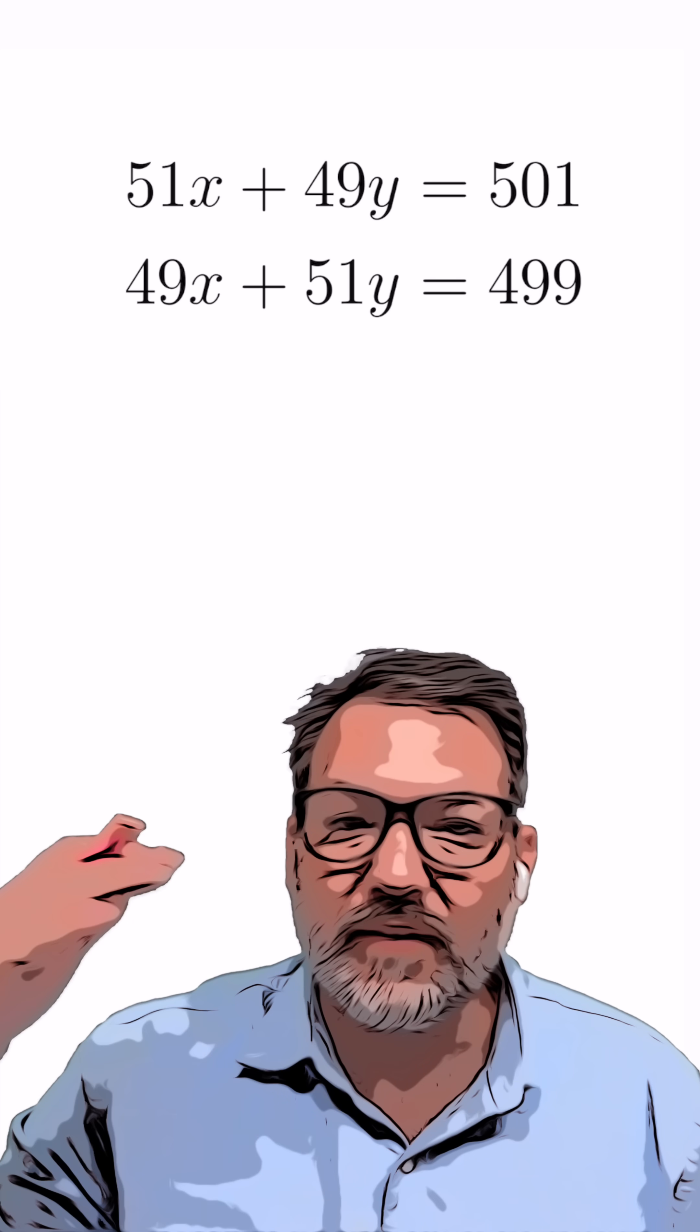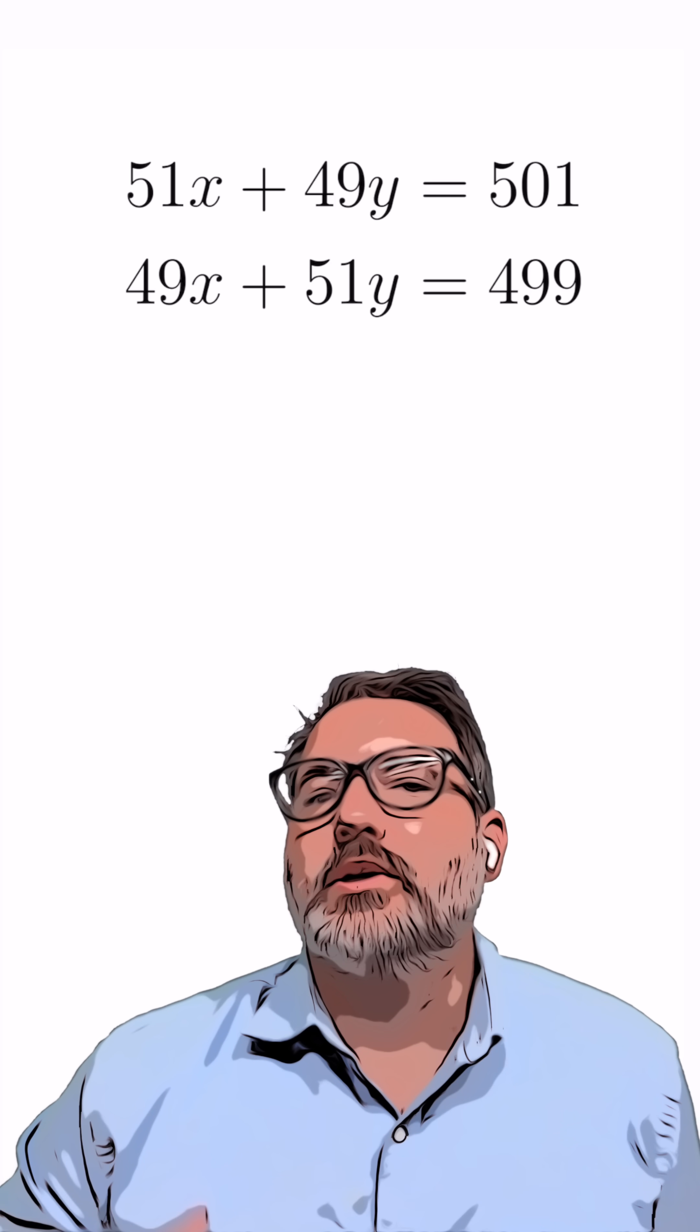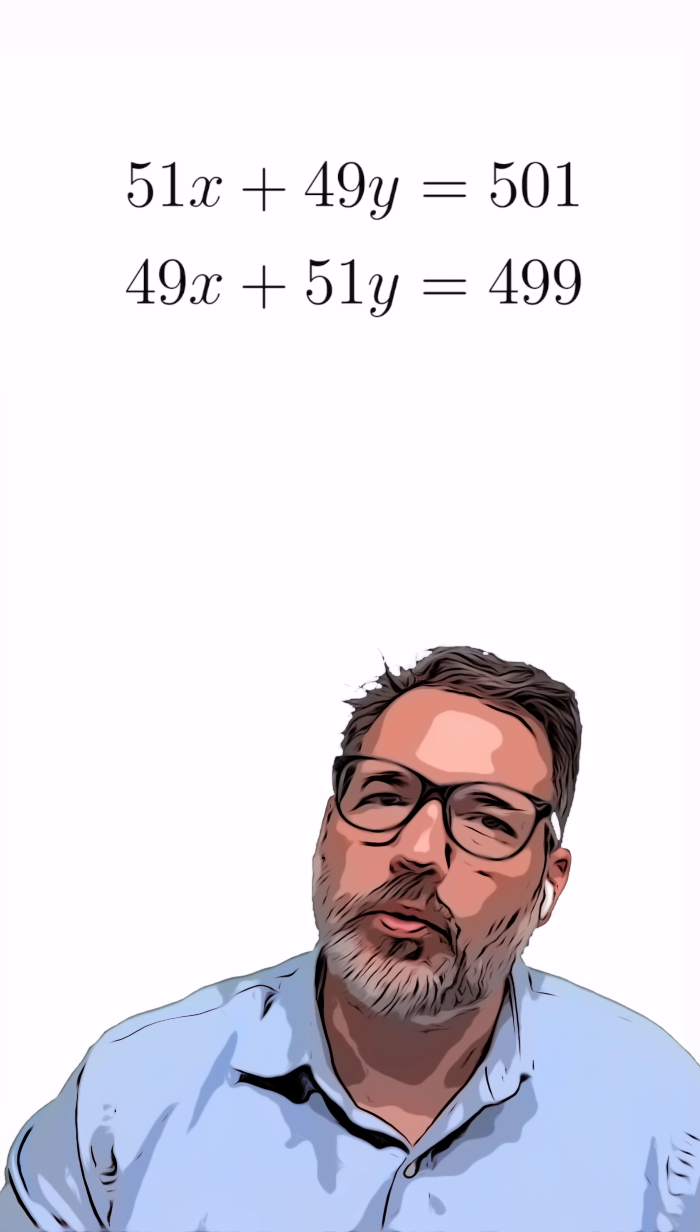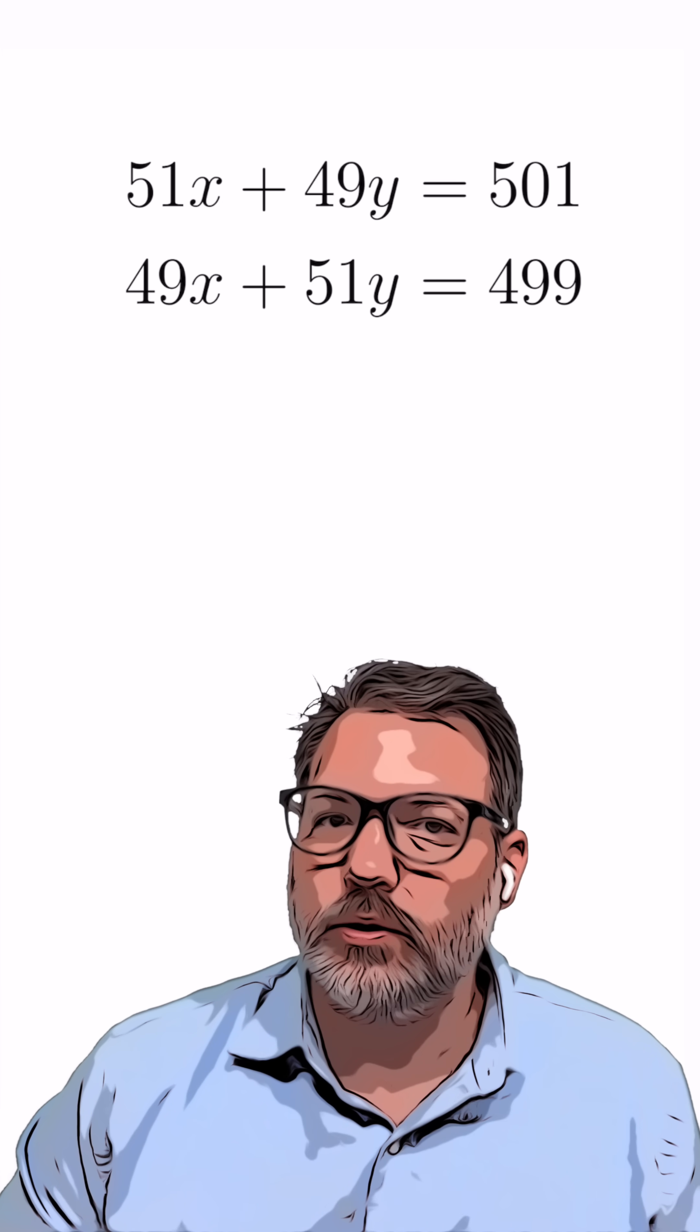A system of equations is kind of like the level up from basic algebra. In basic algebra, you have one equation with one variable, and you're usually just undoing things in order to get that variable by itself. And once the variable is by itself, that's what we call a solution, right?